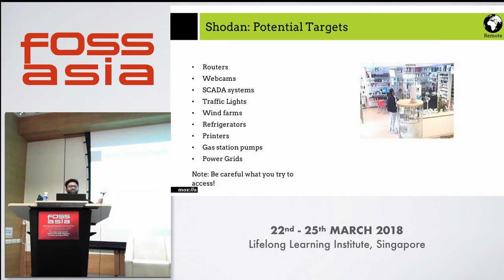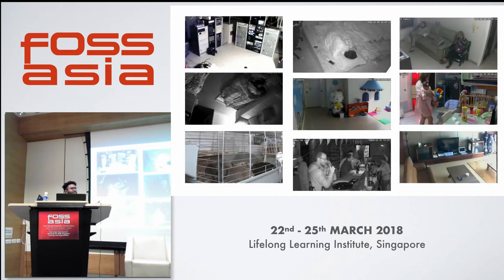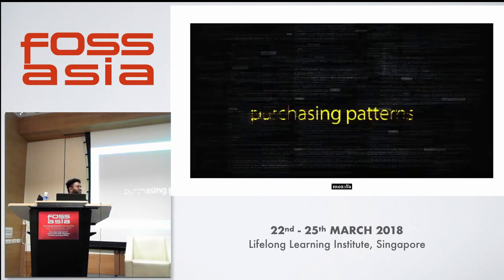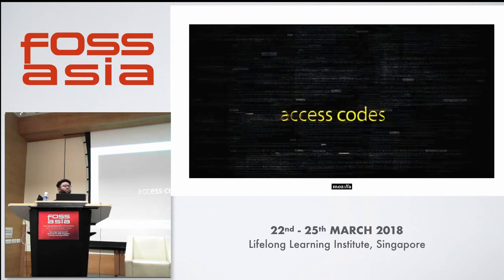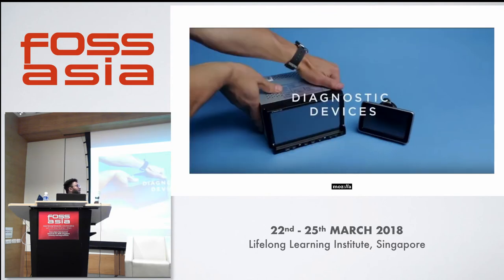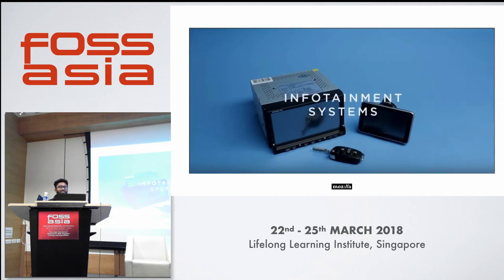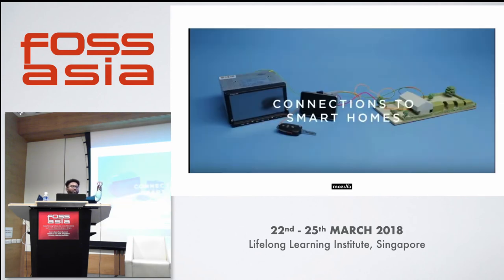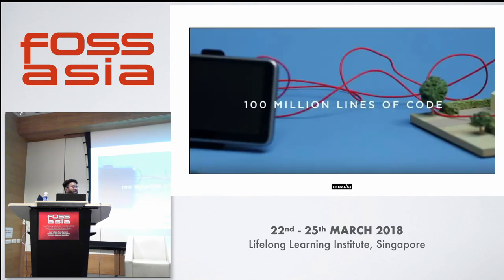These are the targets of this search engine — and it's not illegal. It just searches things that are available and not password-protected, connected to the internet specifically for those devices. Information available includes purchasing patterns, access codes, door logs, driving habits, when we leave and return home, our real-time locations. Our cars even have GPS systems, diagnostic devices, and infotainment systems — all connected to our home. If there's one vulnerability in the ecosystem, it can exploit the whole smart home, which runs a hundred million lines of code. If we get into one tiny bit, we can get access to the entire smart home — even your life.